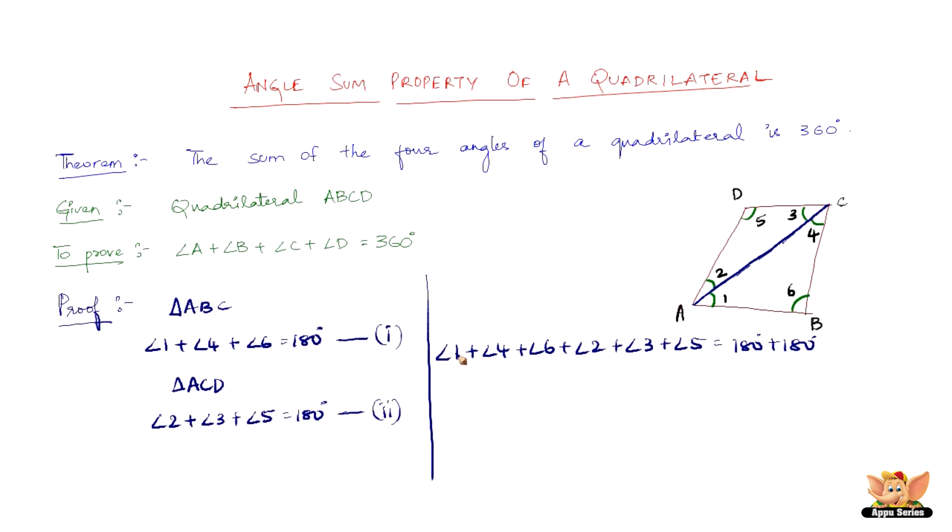Now angle 1 plus angle 2 is nothing but angle A, and angle B is nothing but angle 6, and angle C is nothing but angle 3 plus angle 4, angle 5 is nothing but angle D. So angle A plus angle B plus angle C plus angle D equals 180 plus 180 which is 360 degrees.